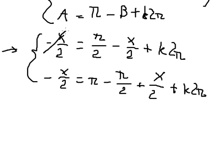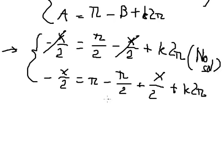So the S over 2 terms cancel, leaving π over 2 plus Kπ. But the S terms also cancel, which means there are no solutions for this case.